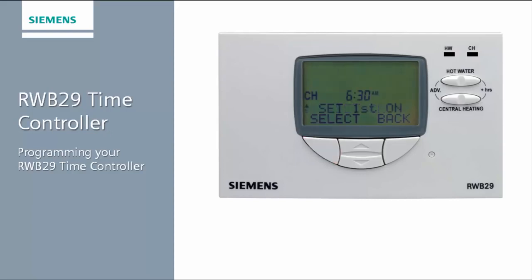The LCD will now display CH and a time with set first on displayed underneath. In our example, we will be changing the first on to 6 am and the first off to 8 am. To change the time, press select and the time will flash. Then use the up or down button accordingly — in this case, we will use the down button to change the time to 6 am.